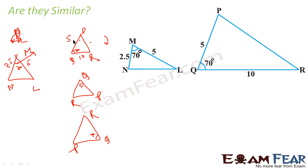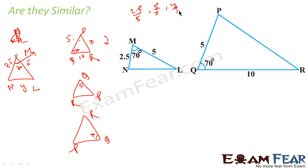Because if you take 2.5 by 5, this is 1 by 2. And 5 by x — x is not known, so you cannot take the ratio. This is some unknown variable y. If you take the sides ratio you will get 2.5 by 5, then 5 by x, then y by 10 — they may or may not be the same. We don't know because x and y are not given, so we can't say anything about this triangle.